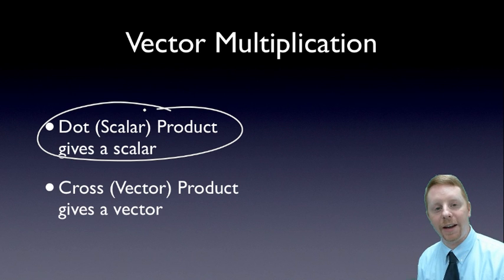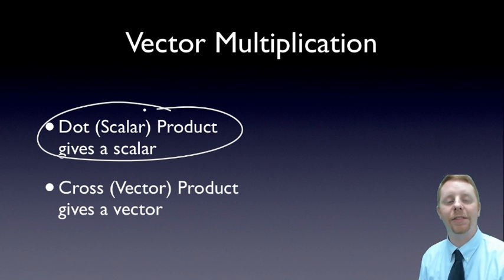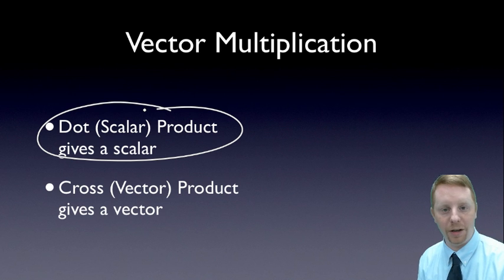Secondly, you could also take a vector, multiply it by a vector, and get another vector as a product. That's known as the vector product or cross product, and that'll be the subject of a different video. So let's focus on the scalar product for today.